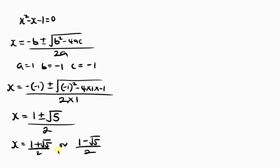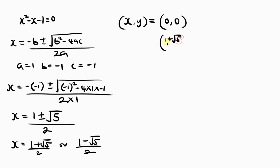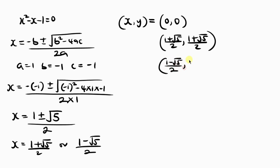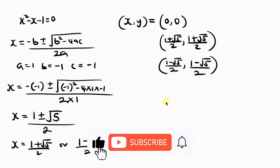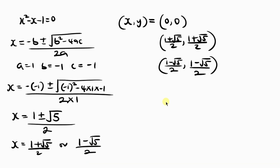So we've been able to get three values for x and y in Case 1. Remember that x equals y in this case. The solutions are: x equals 0 and y equals 0; x equals 1 plus square root of 5 over 2 and y equals the same; and x equals 1 minus square root of 5 over 2 and y equals the same.